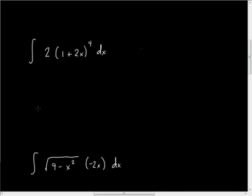The first problem here is the integral of 2 times the quantity (1 + 2x) raised to the fourth dx. Using our first rule, we want to make sure that we understand our patterns of derivatives of polynomials and trig functions. If we look at the derivative of (1 + 2x), we get 2, and we notice that we do have a 2 on the outside. So we're going to let u be (1 + 2x), the inside function.